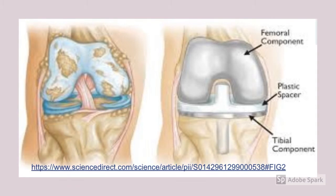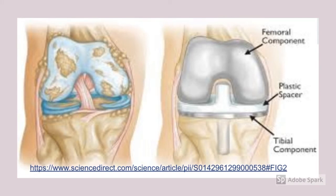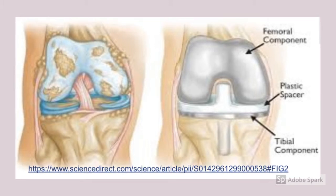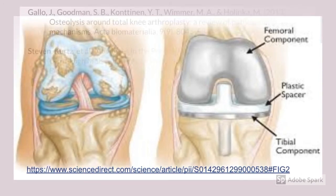In total knee replacements, the polyethylene spacer is subjected to higher amounts of contact stress than compared to the hip. This is caused by the sliding, rolling, and rotational motion of the femur. Due to these various factors, cross-linked polyethylene has shown adverse effects. As a result, it is found that conventional polyethylene may be the best option due to its toughness and less reactive particle formation.